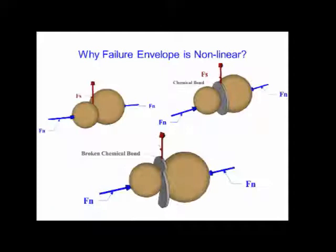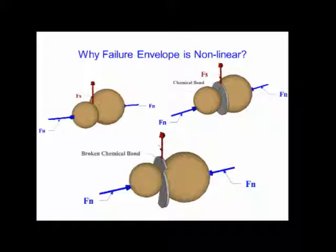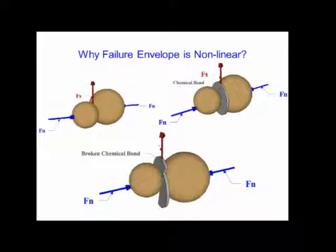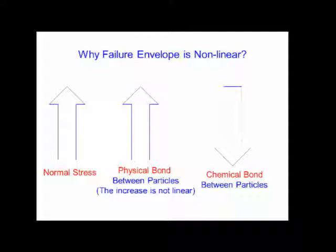Theoretically the envelope should be linear, but it is not because we have two kinds of bond between aggregates: physical bonds and chemical bonds. When you increase the normal force between particles, the shear force required to separate them increases too. But when you have a chemical bond, you have a higher shear force to overcome. However, as you continue to increase normal force, the chemical bond starts to degrade — so chemical bond contribution weakens while physical bond continues to increase. In summary, as normal stress increases, physical bond between particles increases, but chemical bond degrades.